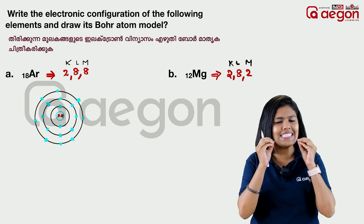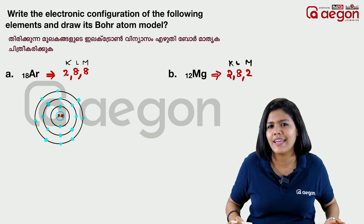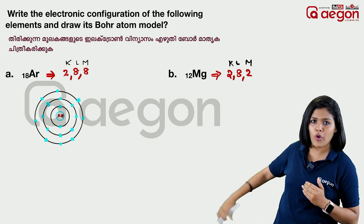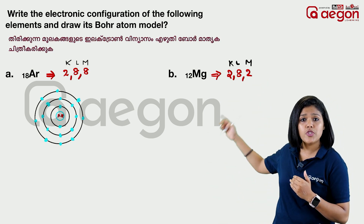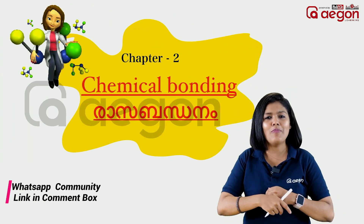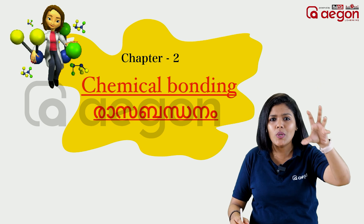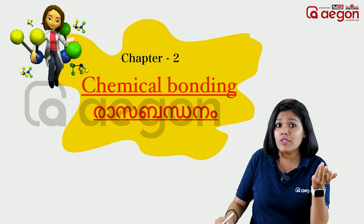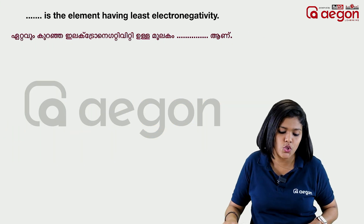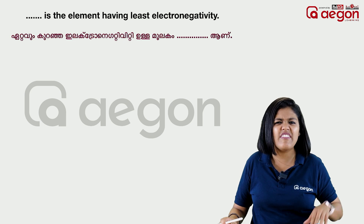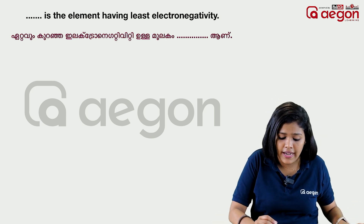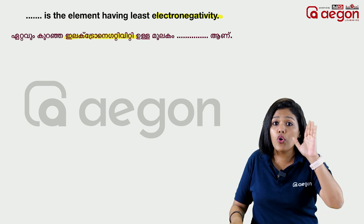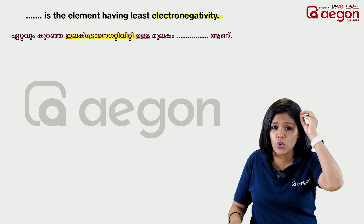As homework, the teacher asks you to practice using atomic number and electronic configuration to draw the Bohr model. This is atomic number and electronic configuration — how to draw the Bohr model. We are going to move to the next topic in the first chapter.